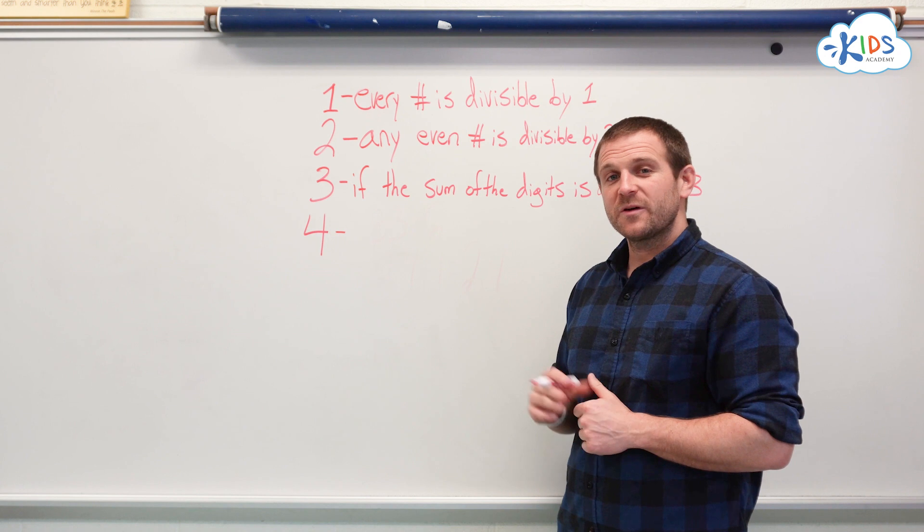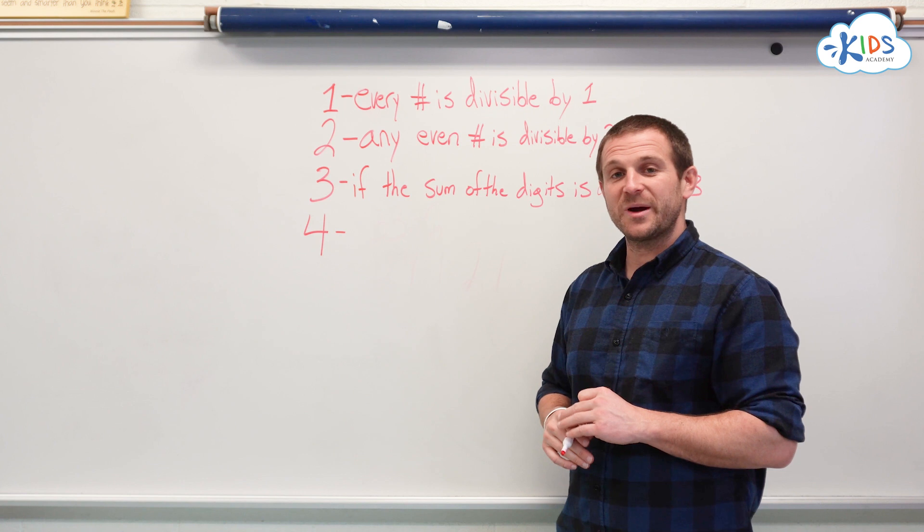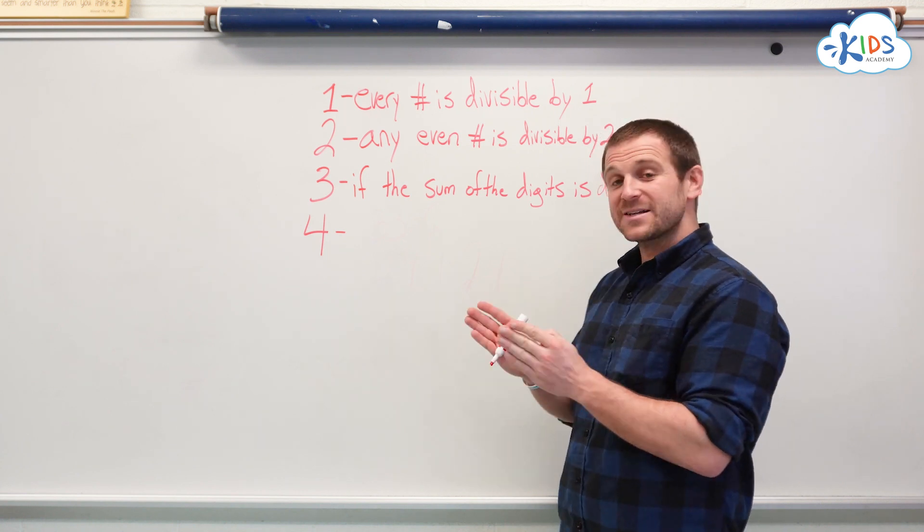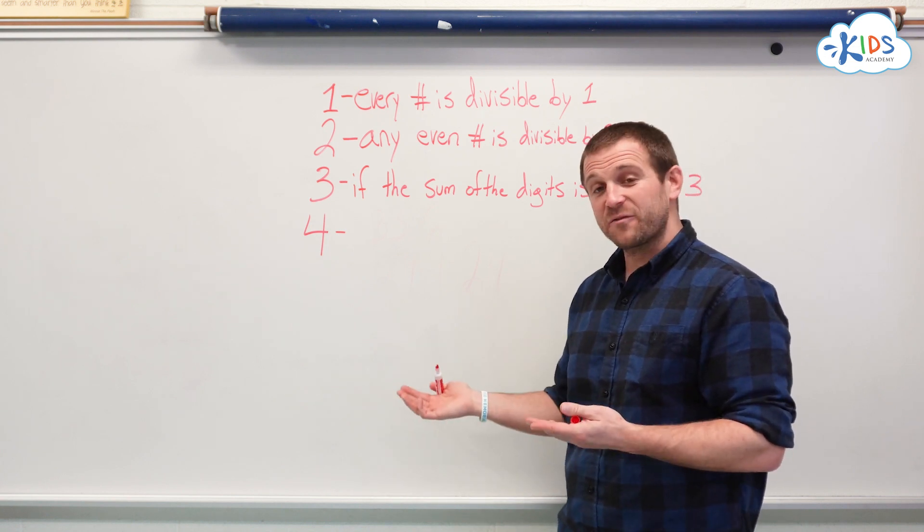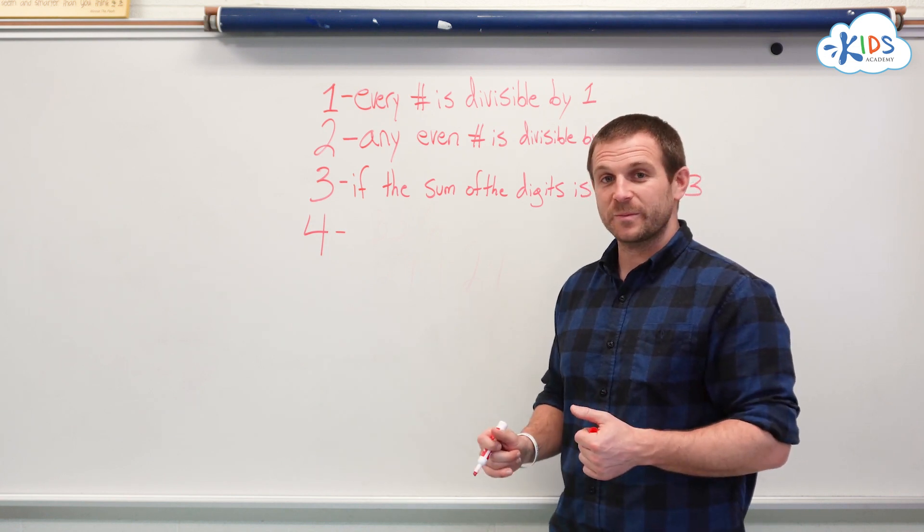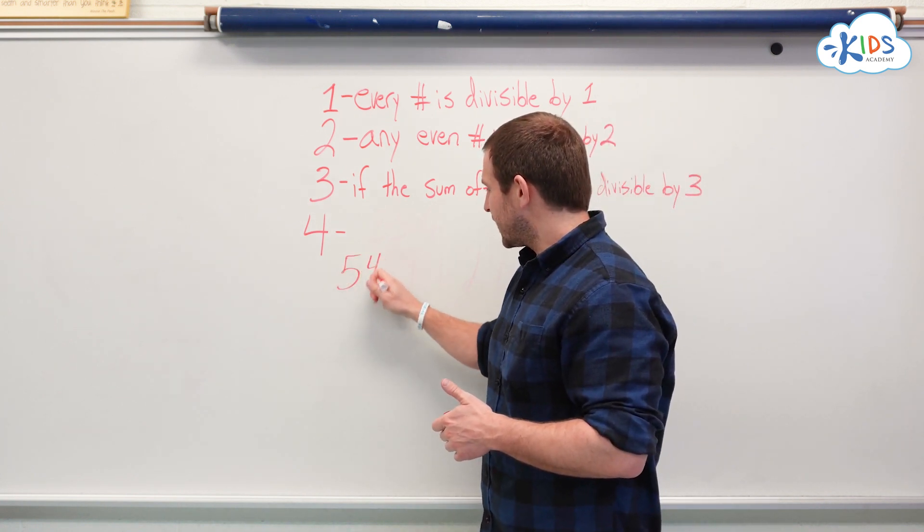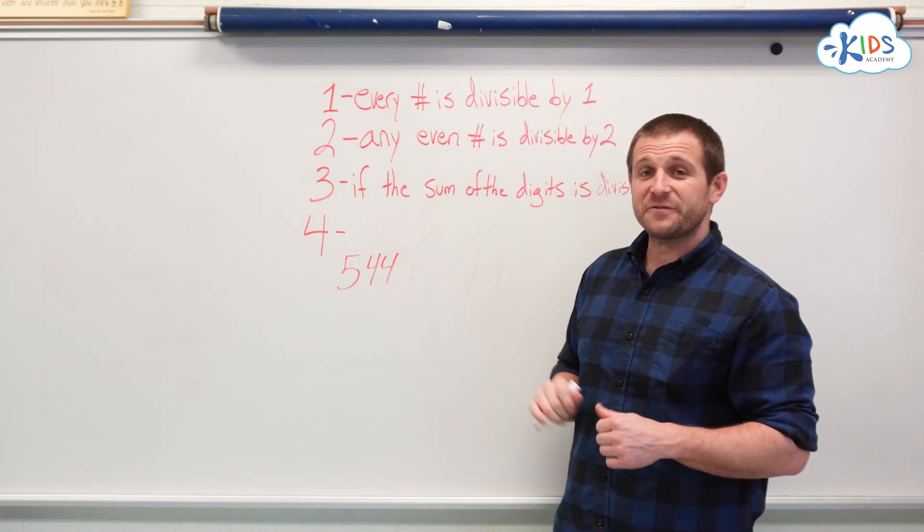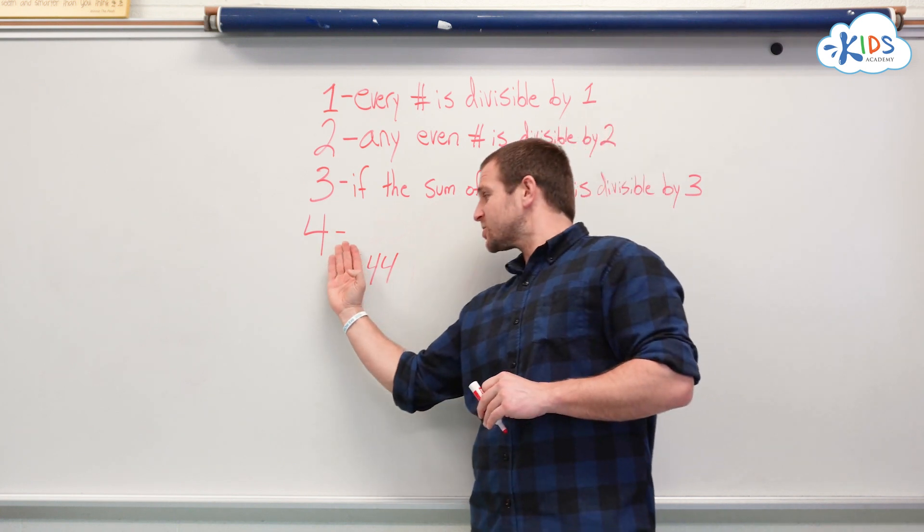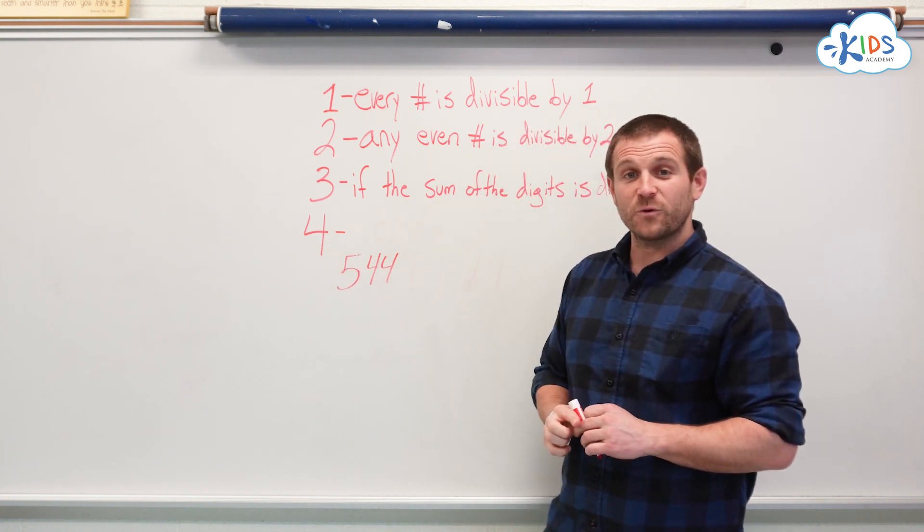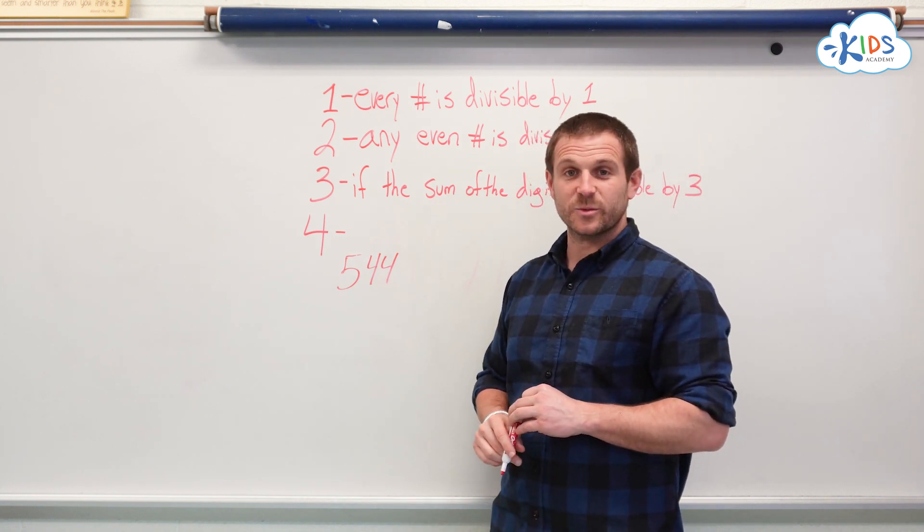Next up is 4. 4 has a pretty simple strategy as well. When you're looking at a large number to decide if it's divisible by 4, all we have to do is look at the last 2 digits. If the last 2 digits by themselves make a number divisible by 4, then the whole number is divisible by 4. Let's take 554. If we're looking at 554, we can just look at the last 2 digits, the 44. 44 is divisible by 4, therefore 554 is divisible by 4.